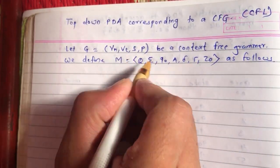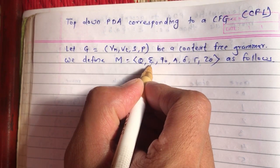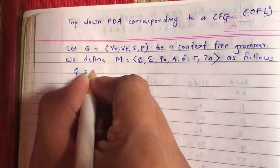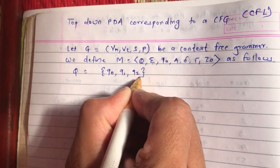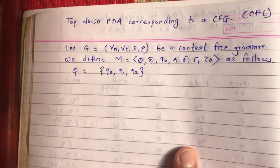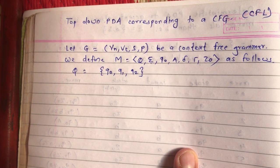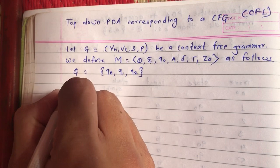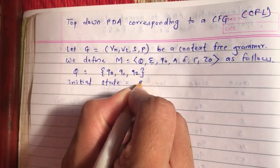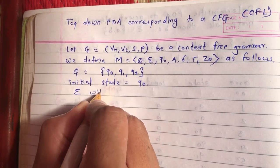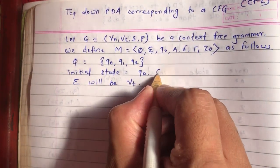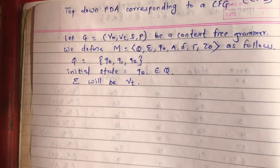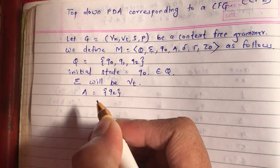Our terminal symbols will be referred to as alphabet symbols. The set of states Q will comprise of only three states in every problem of this grammar-to-PDA conversion type — those three states are Q0, Q1, and Q2. Our initial state will be Q0, the alphabet will be the terminal symbols VT from our grammar, and the accepting state will always be Q2.